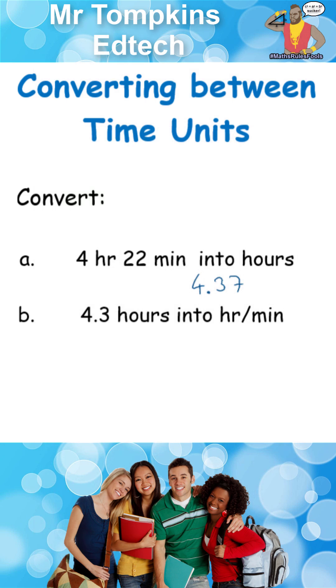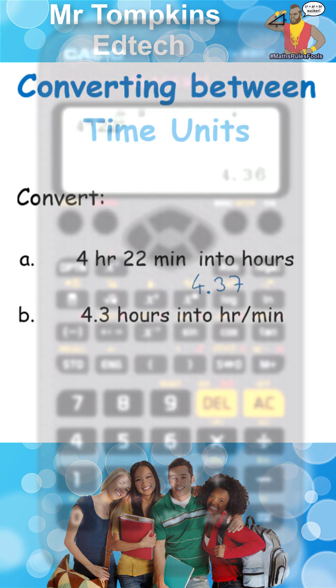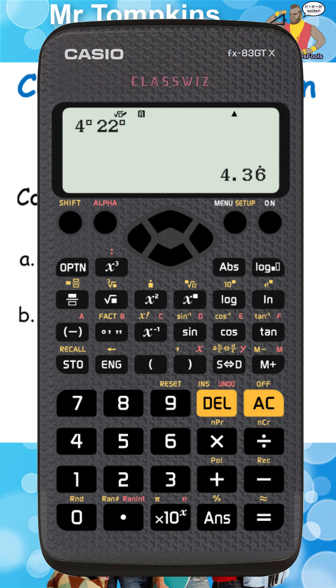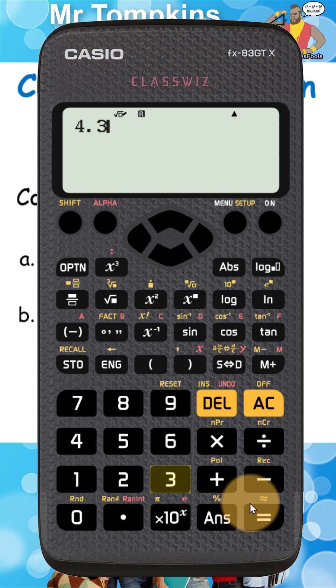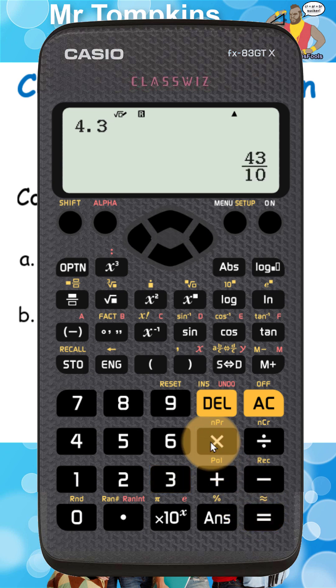Next, convert 4.3 hours into hours and minutes. So I need to go back the other way here. I'm going to start off by typing that decimal number into the old calculator, 4.3. I'm going to press the equal button and then I'm going to press that time key.